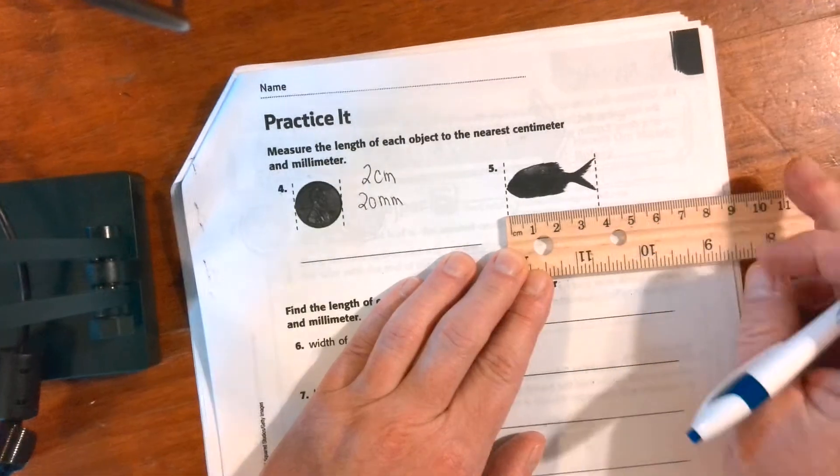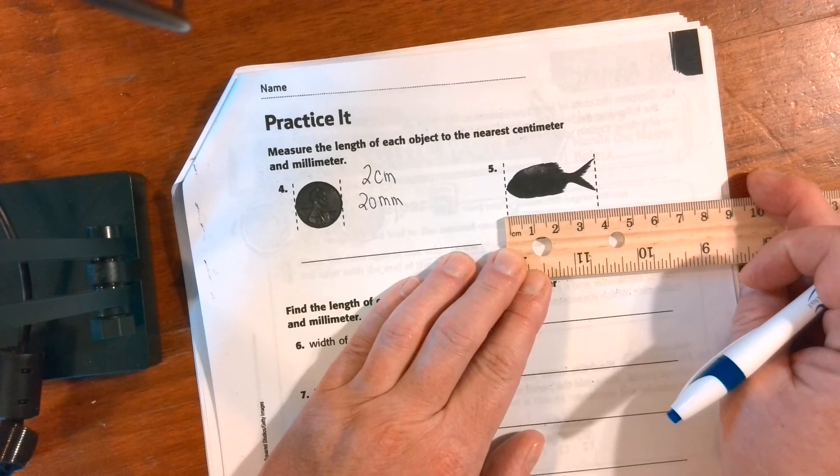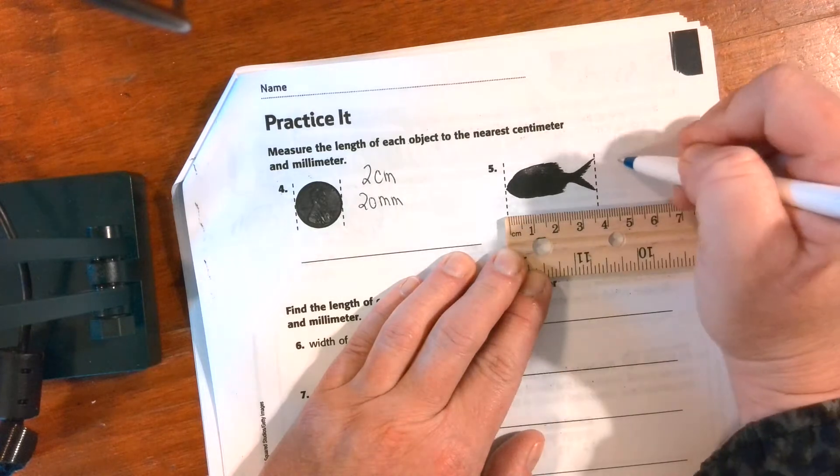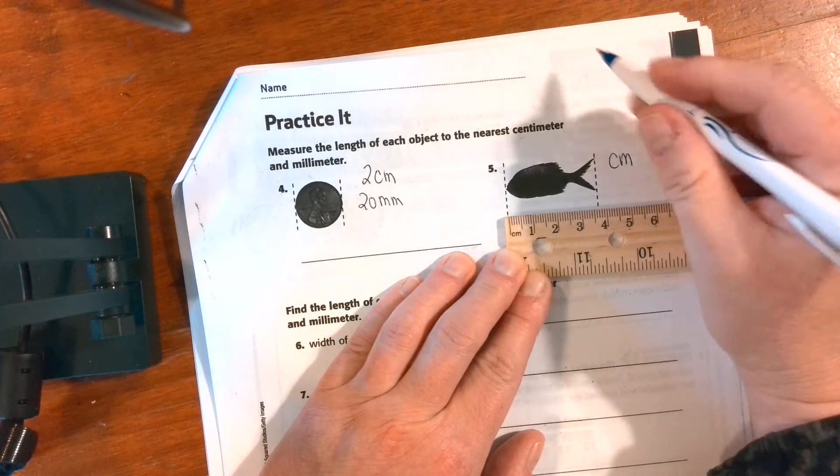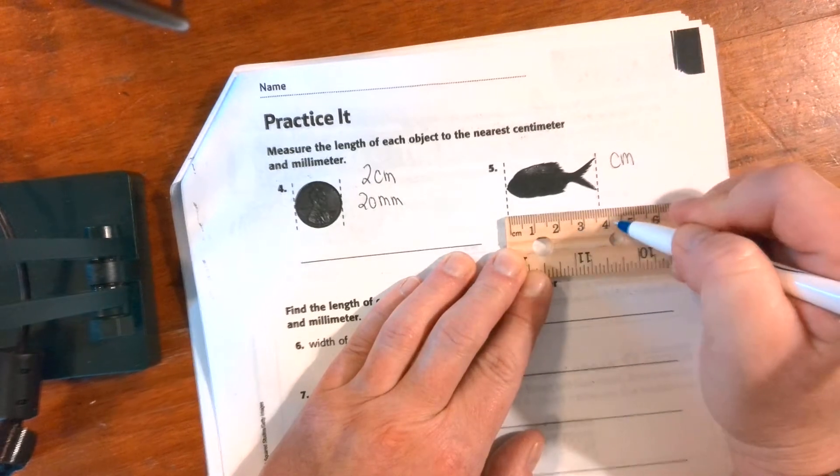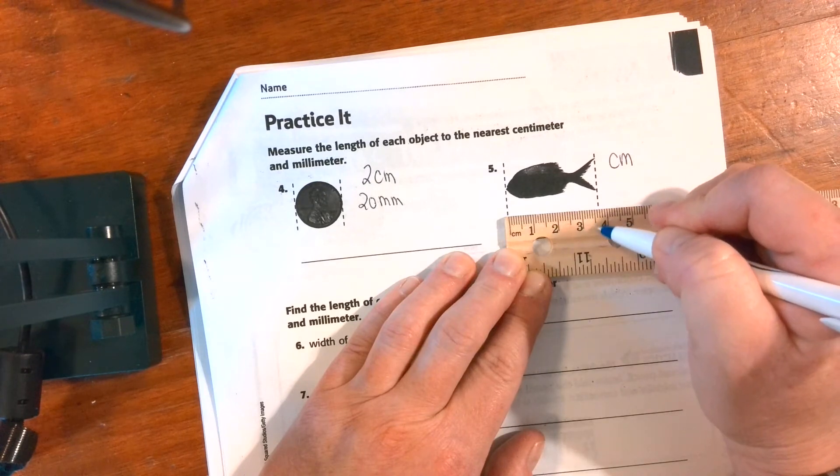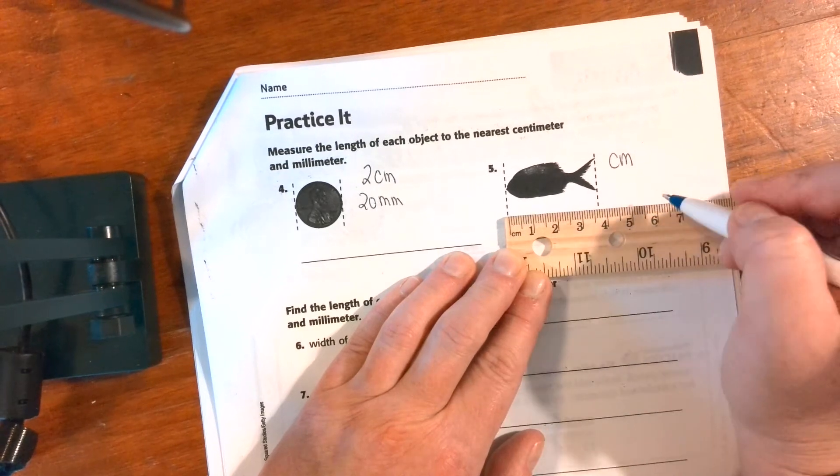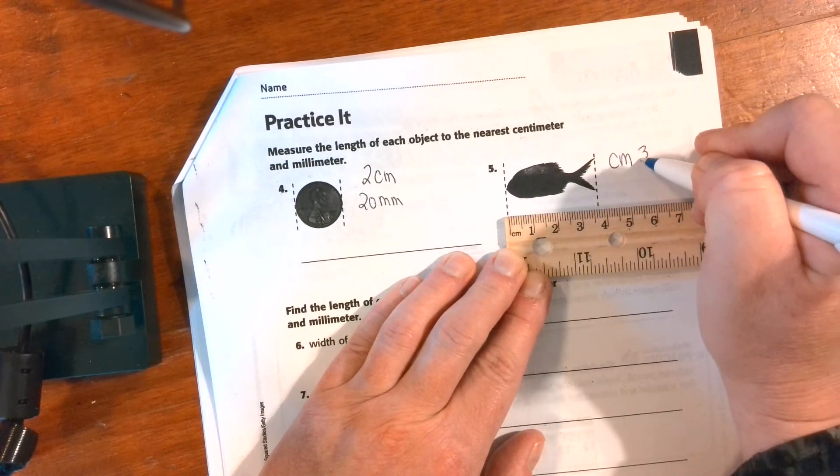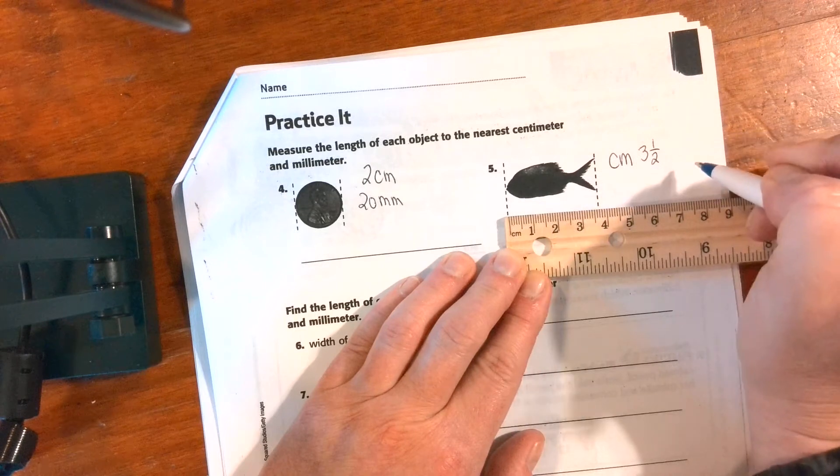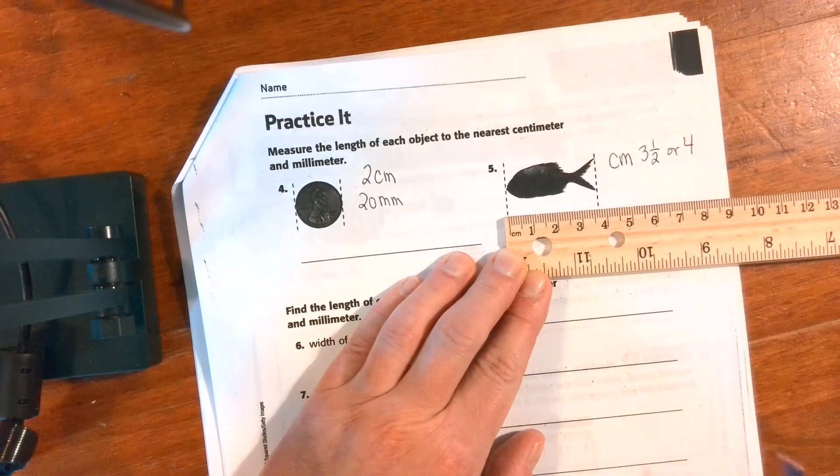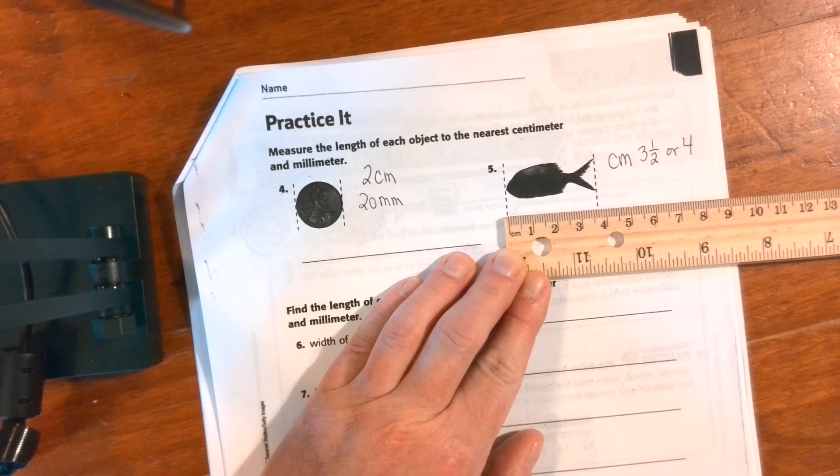All right, now this one is not a full centimeter, so where would we round it? So I think you could either do it as we have three and here's four and here's three and a half. That big line in the middle means a half, so you could say three and one-half centimeters or you could round it all the way up to four. I think either measurement would be a fine estimation.